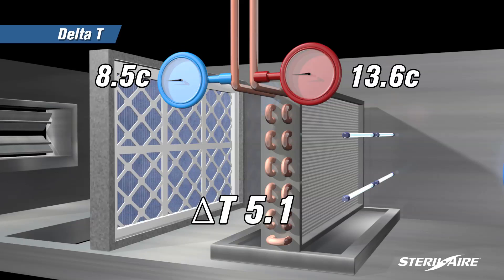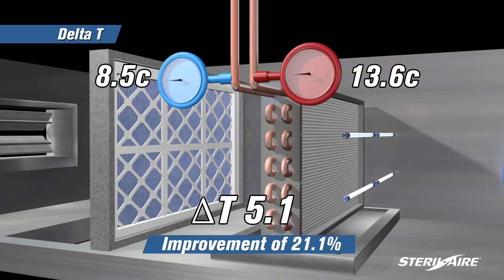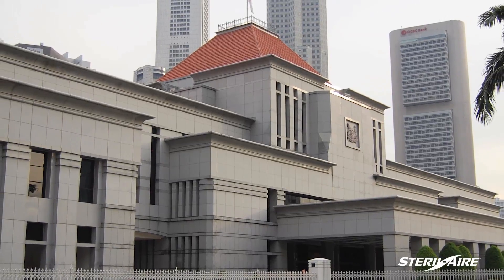with a delta of 5.1, an improvement in coil efficiency of 21.1%.